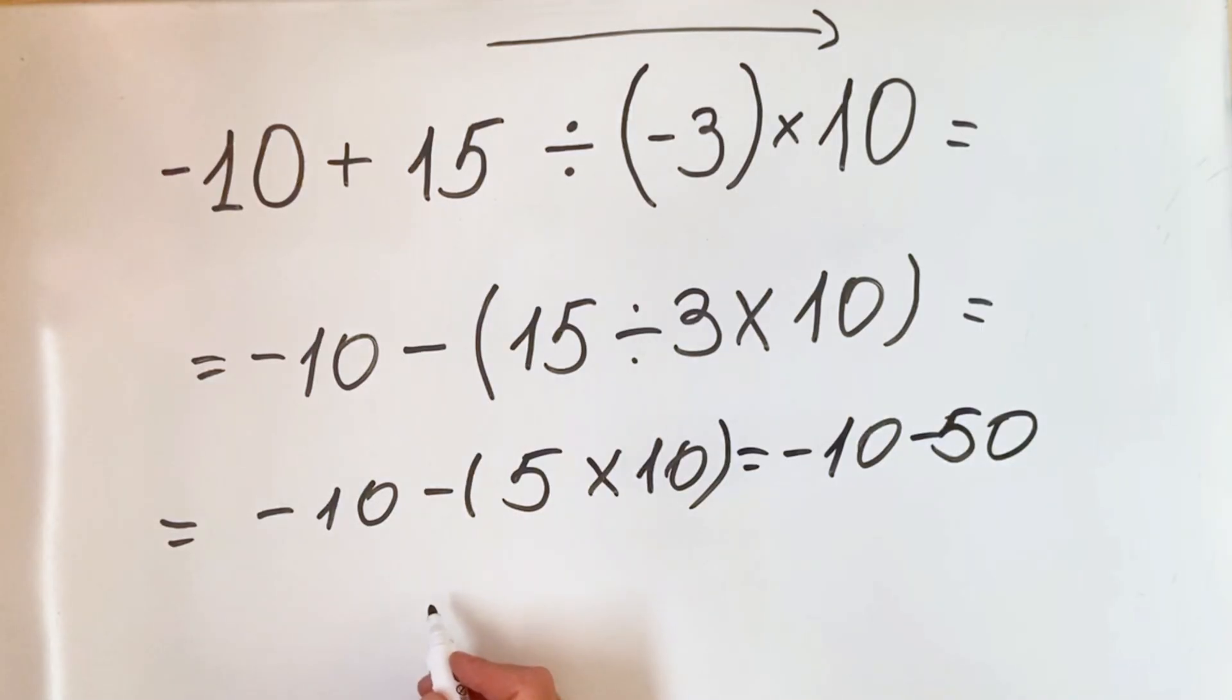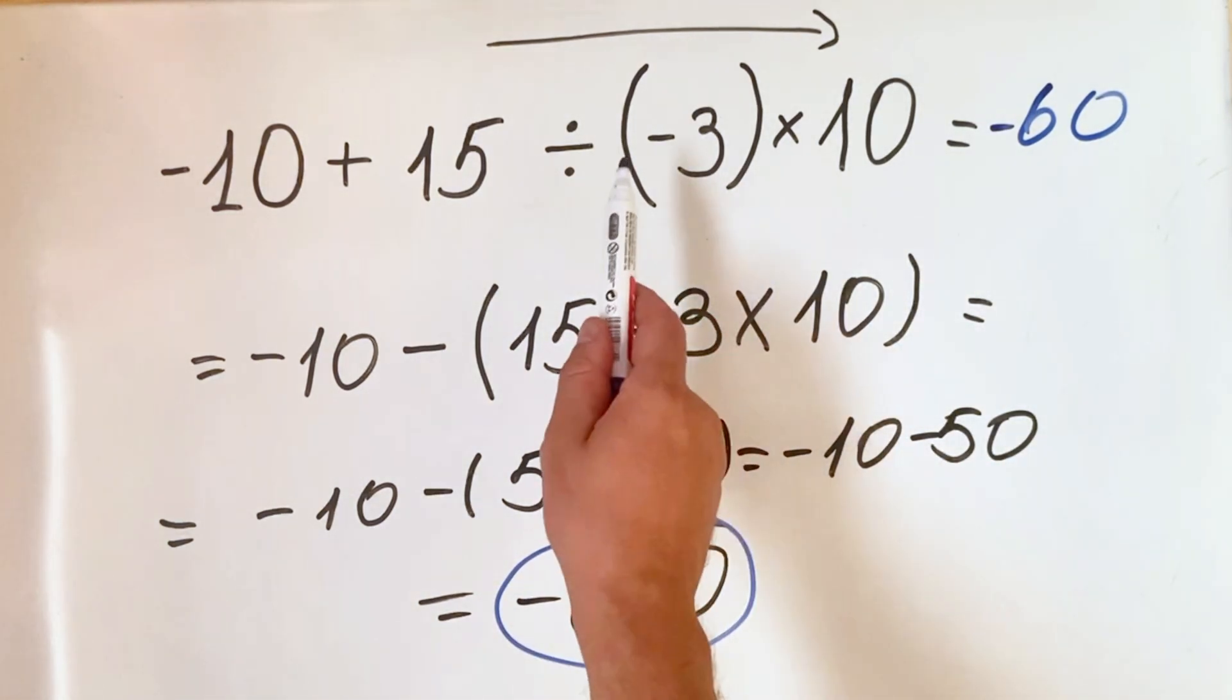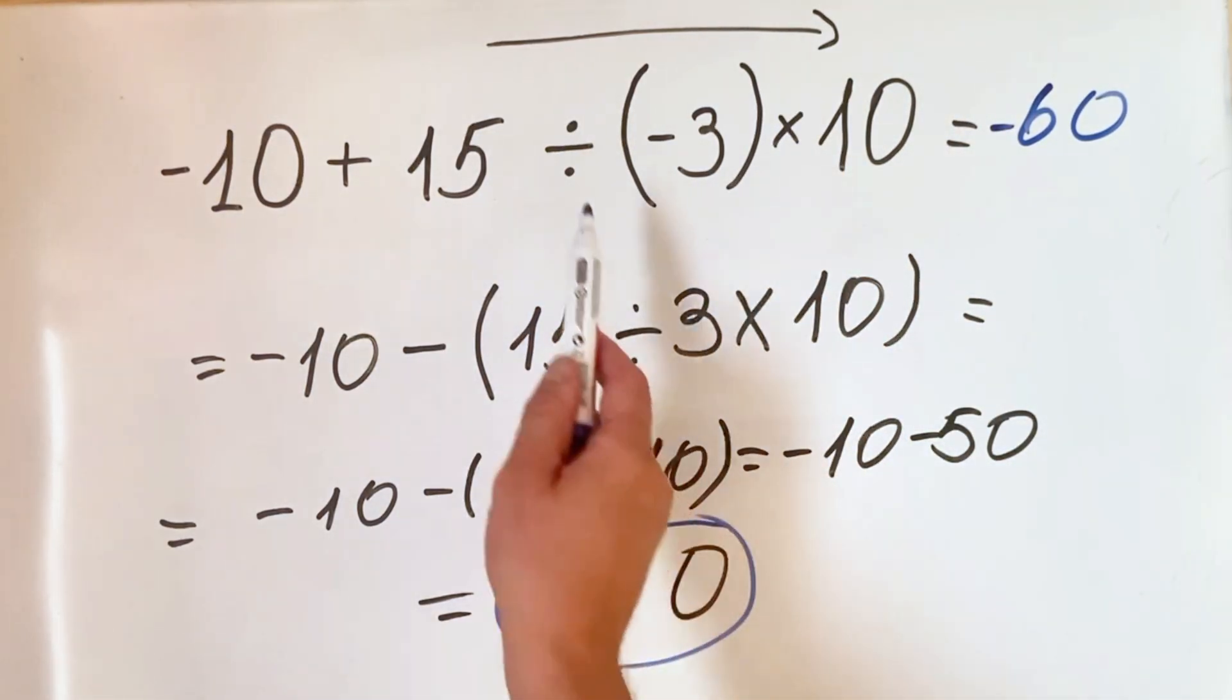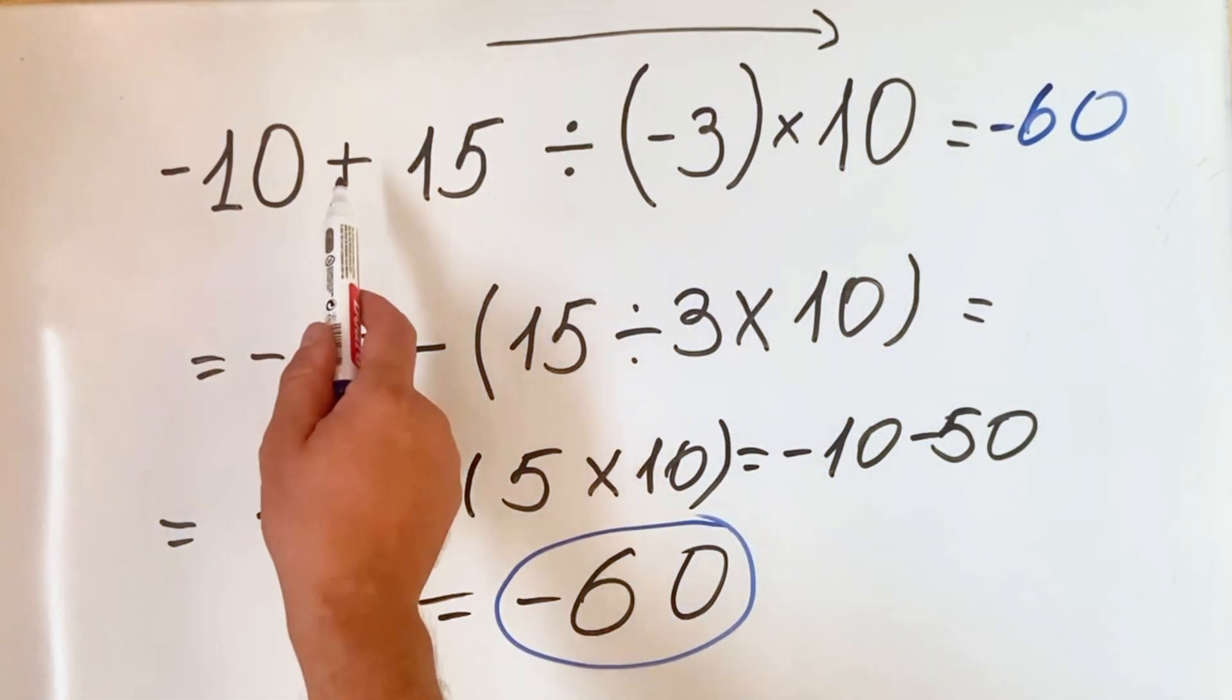And the answer is minus 60, and this is the correct answer guys. So first you must follow the order of operation from left to right. You do first division, then multiplication, and therefore at the end you do addition or subtraction.